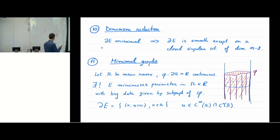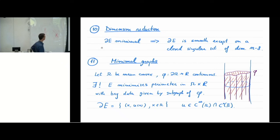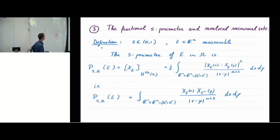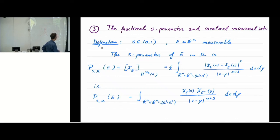I'm almost at the end of this lecture. I took a little more time with this introductory stuff, but it's important because essentially all these things are true for classical minimal surfaces, and one would like to reproduce them in the non-local setting. A lot of them look similar, but there are some interesting differences — some things cannot be done, some things are better, some things are worse in the case of non-local minimal surfaces. Let me take the last two minutes to introduce what non-local minimal surfaces are, for the purpose of the next lecture.